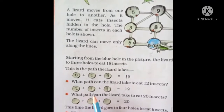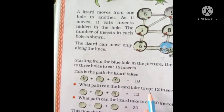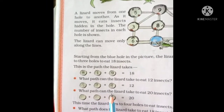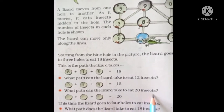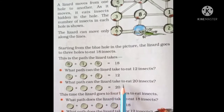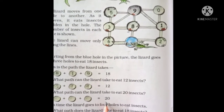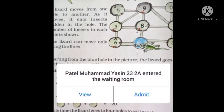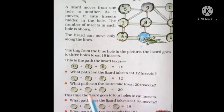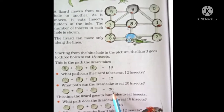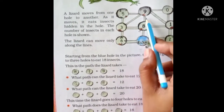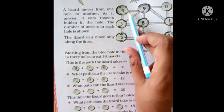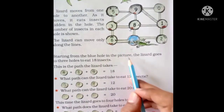Next question: what path can the lizard take to eat 20 insects? Ab humein yahaan pe teen aise hole lene hain jismein 20 insects hon. Teen number ko add karoge to 20 hoga. Which three numbers will you add to get the total 20? Yahaan se wo enter hoti hai to wo direct 9 ke paas nahi ja sakti, ya direct 0 ke paas nahi ja sakti — usko 1 by 1, jo path diya hai uske through aage badhna hai.